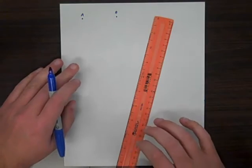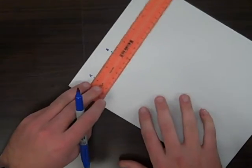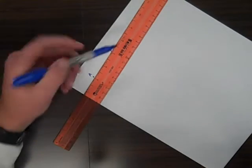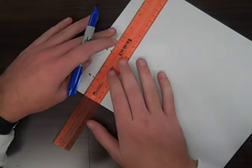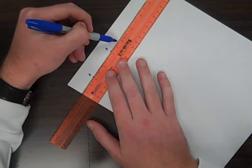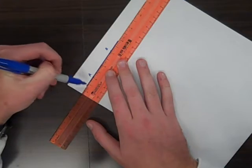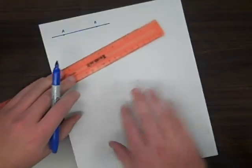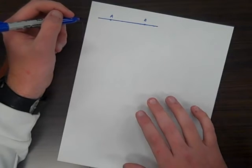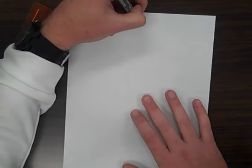Now that I've got my two points, I'm going to connect them with my straight edge. Remember, lines go forever in both directions. So when I connect these, I will start outside of point B and go through point A. To signify that we have a line and that it goes forever in both directions, we do cap the line with arrows.